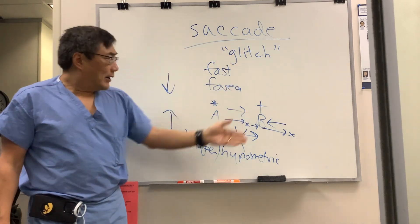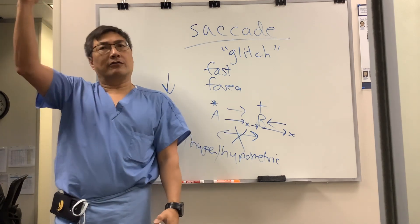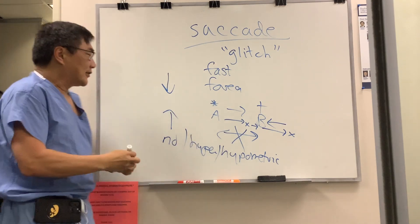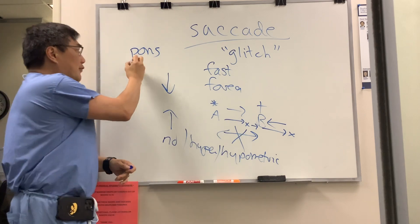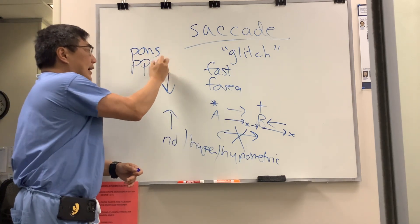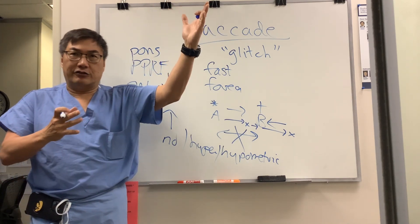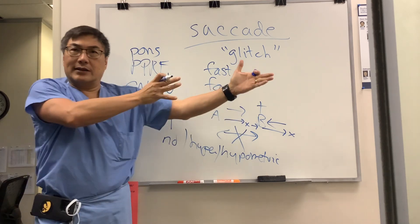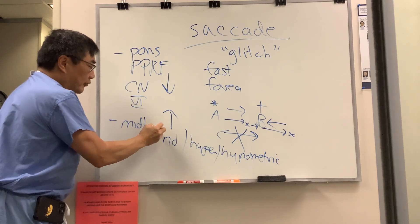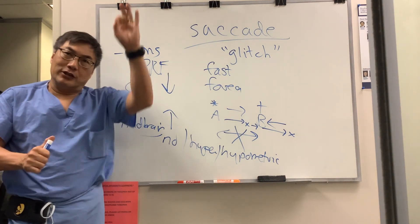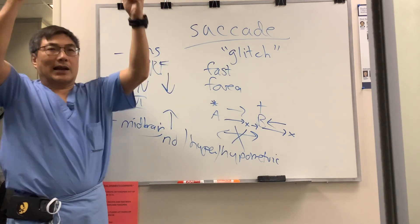These saccadic abnormalities are problems with the fast system. The saccade is initiated in the contralateral frontal eye field. It travels down — for horizontal saccades — to the pons at the parapontine reticular formation, then to the cranial nerve 6 nucleus. It travels to the contralateral medial rectus via the medial longitudinal fasciculus to generate that saccade. For vertical saccades, that is in the vertical gaze center in the midbrain — the rostral interstitial medial longitudinal fasciculus — initiated by bilateral frontal eye fields.